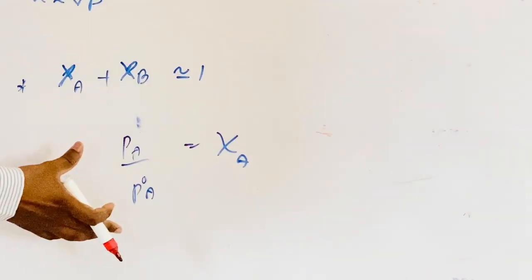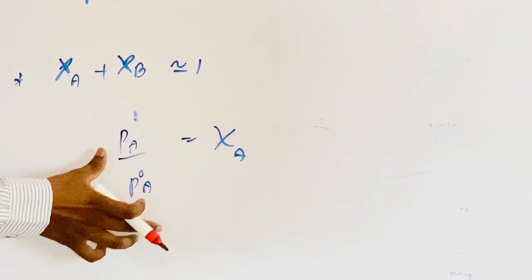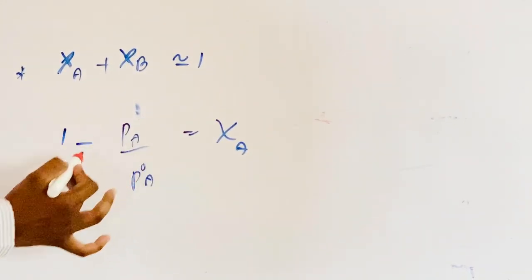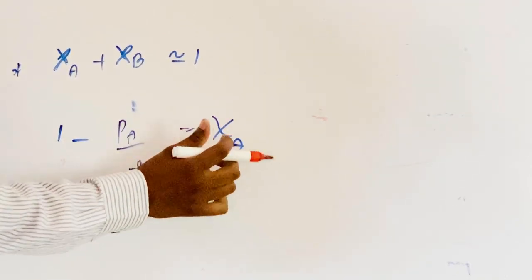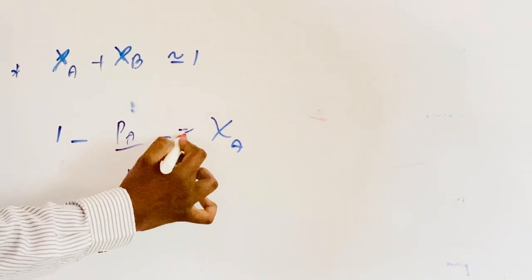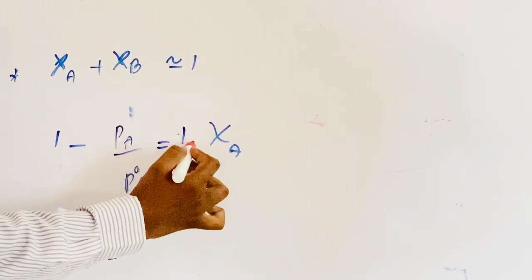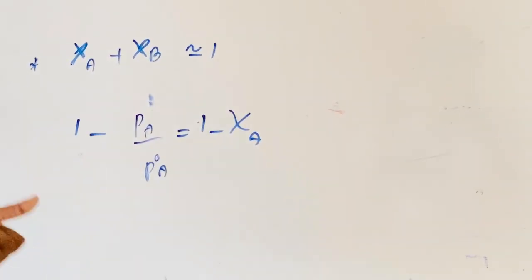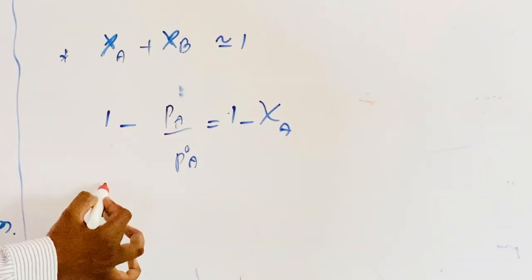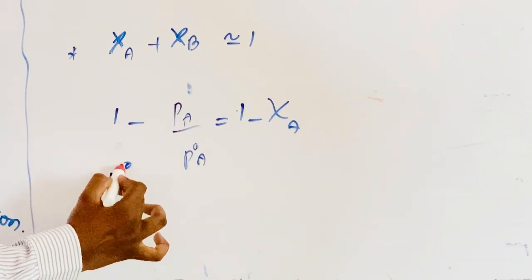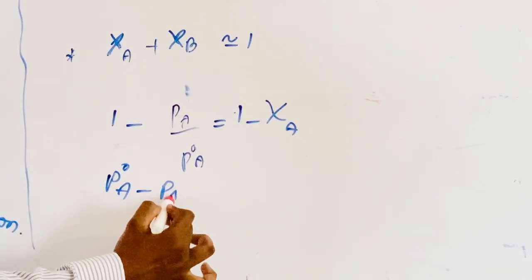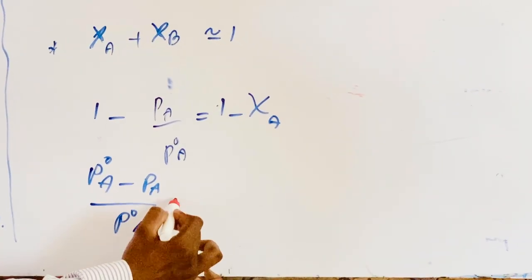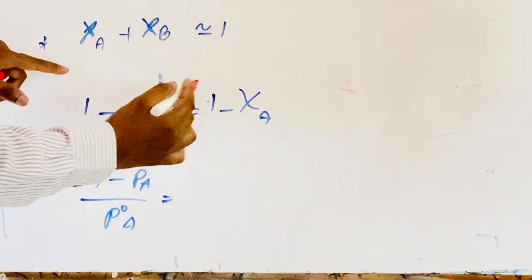Now, while subtracting each side from one: one minus P_A/P₀ of A is equal to one minus χ_A. Therefore, subtracting the given equation: (P₀ of A minus P_A) divided by P₀ of A is equal to one minus χ_A.